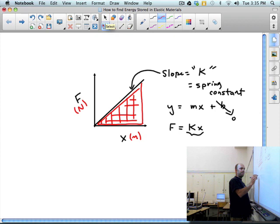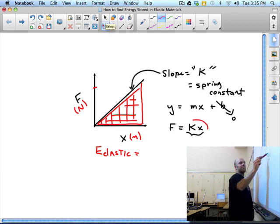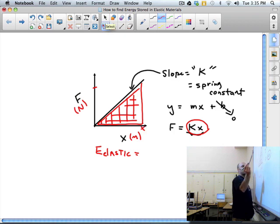So energy elastic, which is going to be newtons times meters, is the area of this triangle. We said that force can be found by spring constant times X. The base of this triangle, let's just call that X.